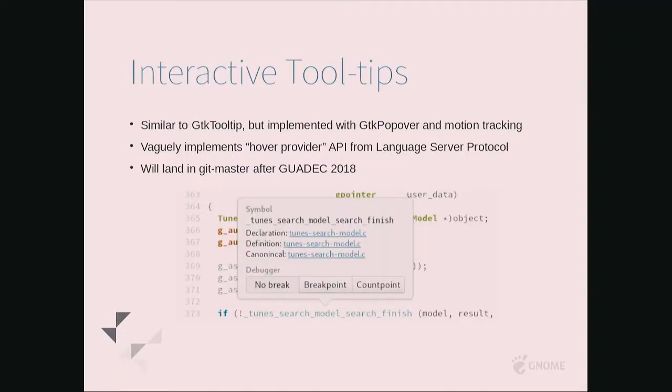This will land soon — it's a new tooltip engine. Each tooltip can be provided by a different plugin. At the top you see the symbol provider plugin: it resolves what symbol was under the cursor, provides the location where that data is defined, declarations versus definitions. The debugger allows you to attach breakpoints and countpoints. A countpoint is a breakpoint that will not stop — every time you hit it you get a counter, so it's really useful to see how much a piece of code is being hit.